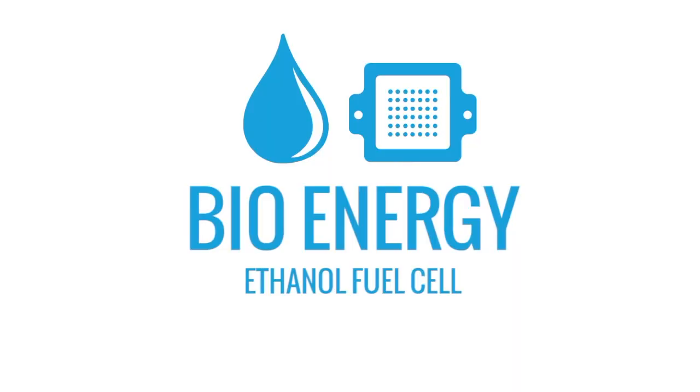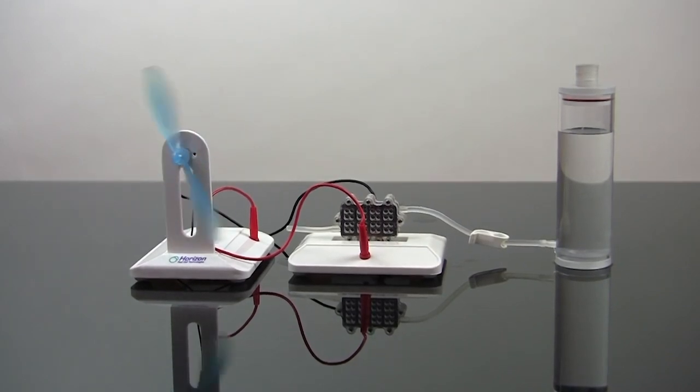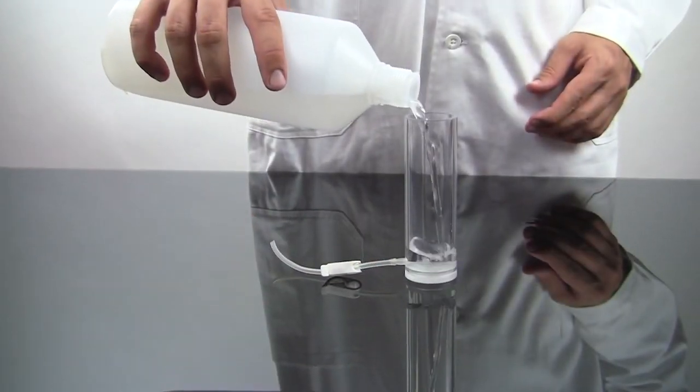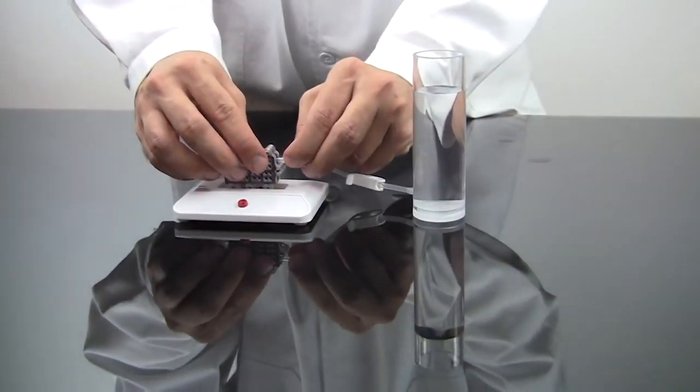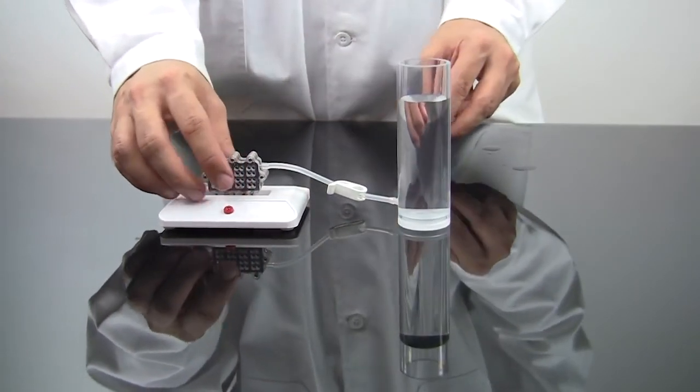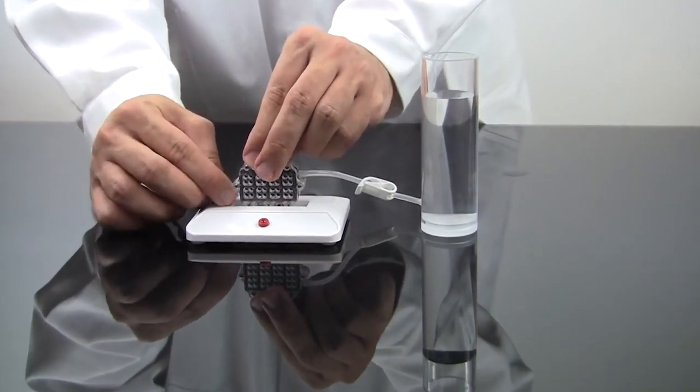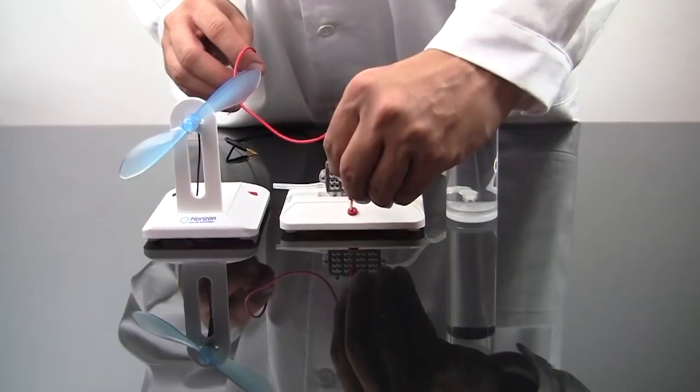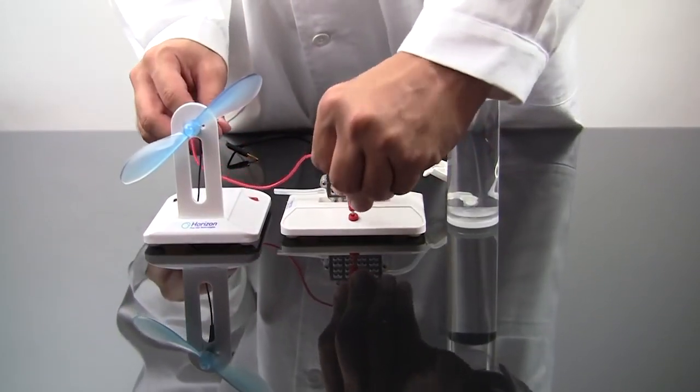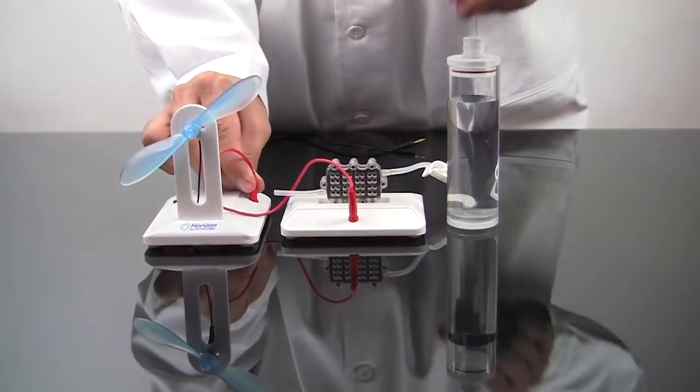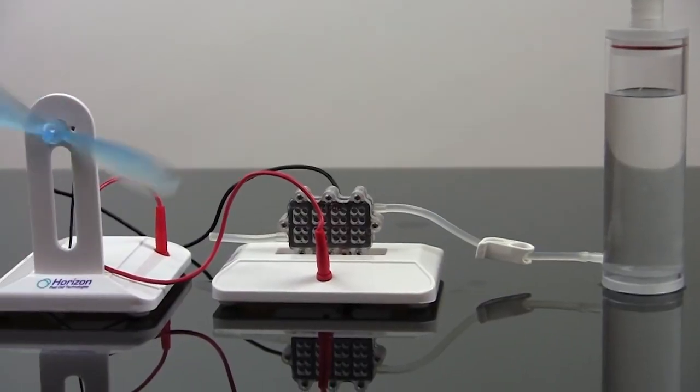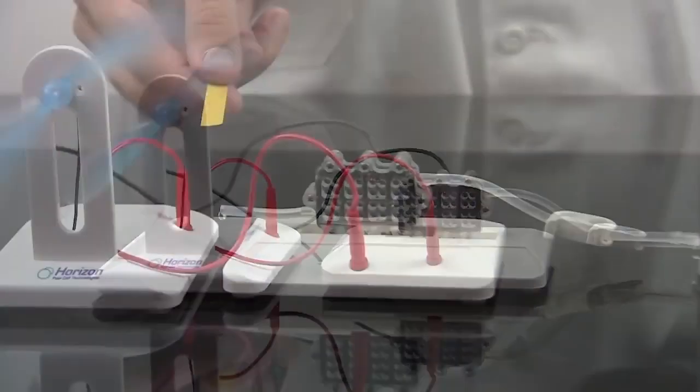Students can explore bioenergy with the ethanol fuel cell. Just fill the cylinder with 10% ethanol solution and use tubing to attach it to the fuel cell. Connect a small length of tubing for exhaust and you're ready to generate electricity by connecting the fuel cell to the fan motor. The included pH paper allows students to determine the acidity of the fuel cell's exhaust.